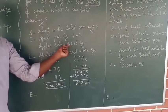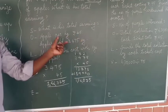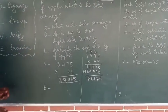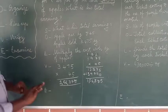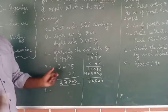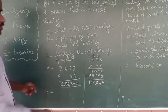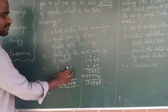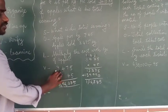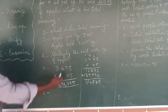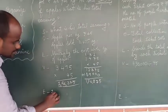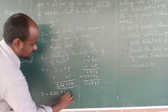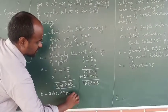Now I have to examine. The opposite of multiplication is division, so I am going to divide this number by 45. If I divide and get 3,475, then my answer is correct. So I am going to divide 1,56,375 by 45.